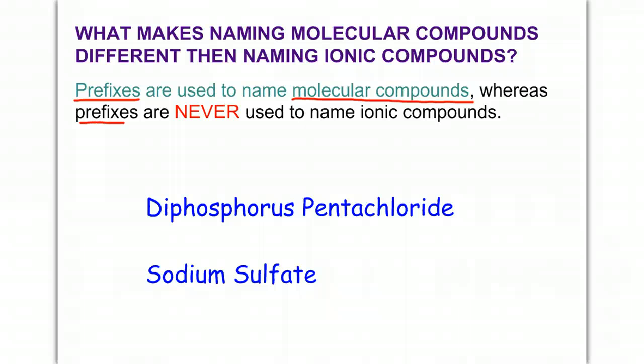Okay, so these prefixes you're about to learn are never to be used to name an ionic compound. All right, so here are two examples.